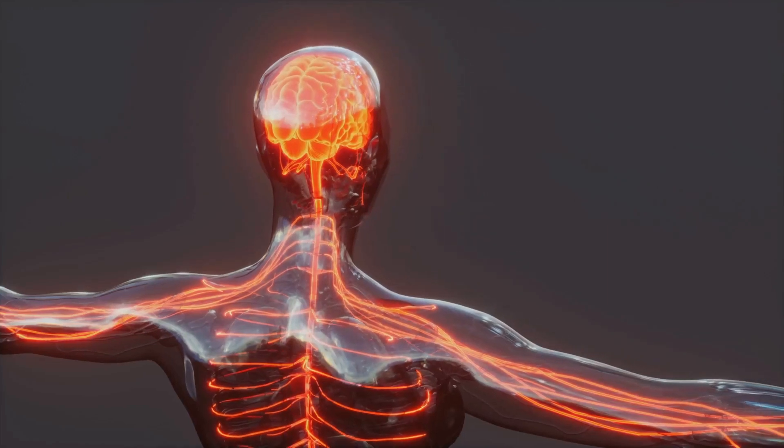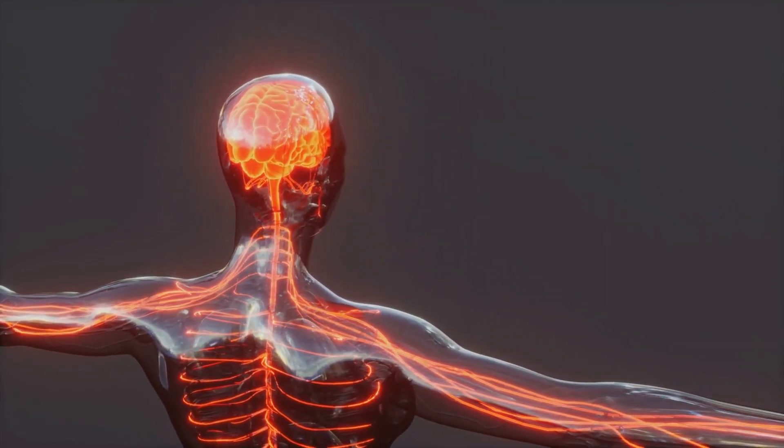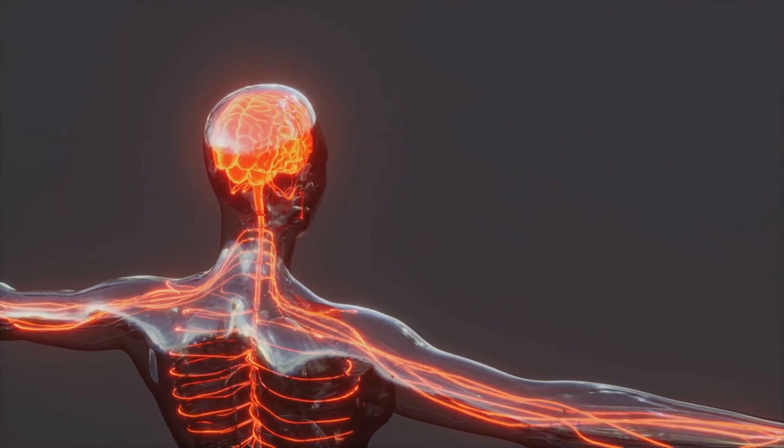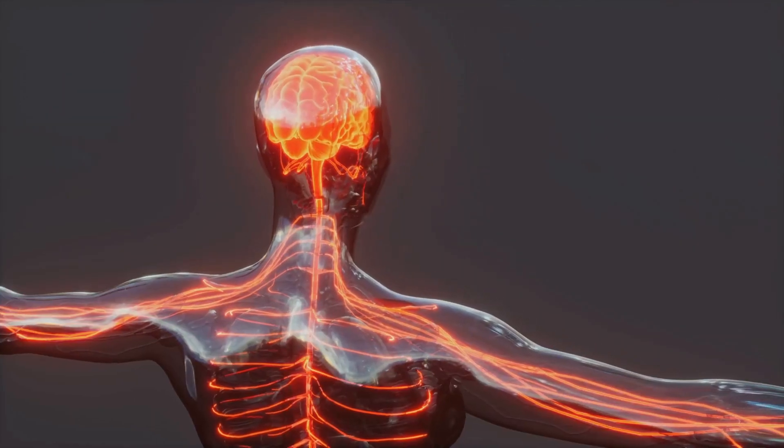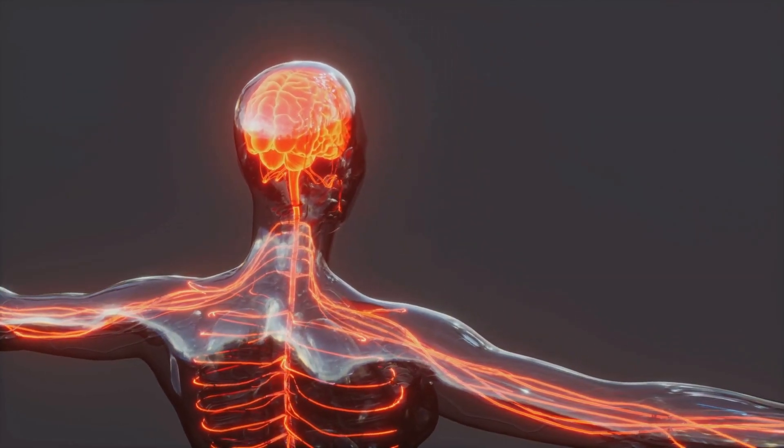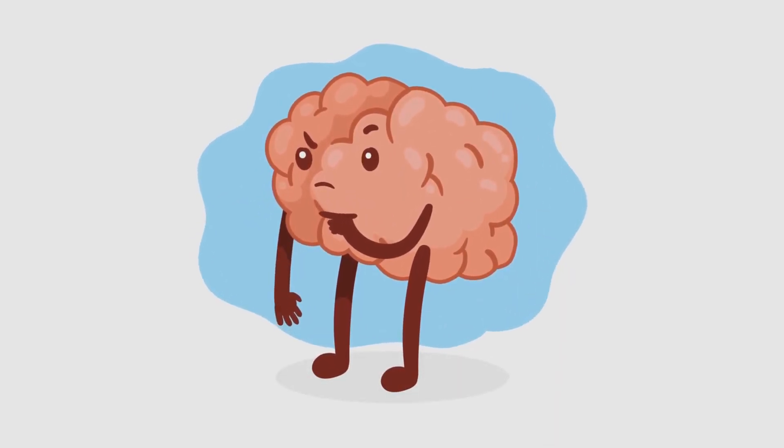Your brain sends lightning-fast messages through nerves to every part of your body, faster than you can blink or snap your fingers. These messages tell your muscles to move, your heart to beat, and your stomach to growl when you're hungry. It helps you learn new things, remember important facts, dream up stories, and solve tricky puzzles.